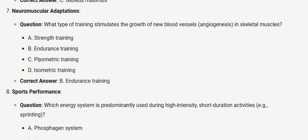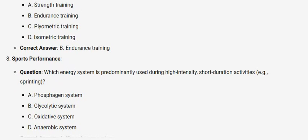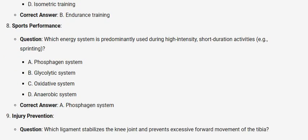Sports performance. Question: Which energy system is predominantly used during high-intensity, short-duration activities, e.g. sprinting? A. Phosphagen system. B. Glycolytic system. C. Oxidative system. D. Anaerobic system. Correct answer: A. Phosphagen system.